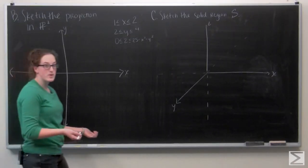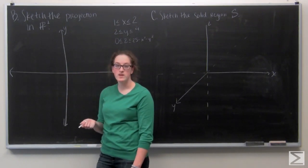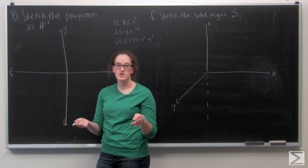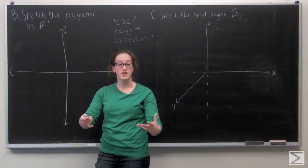Now we're moving on to part B of the problem, which asks to sketch the projection into R2. To think about the projection into R2, think about a spotlight shining down the z-axis. We're going to be looking for the shadow.